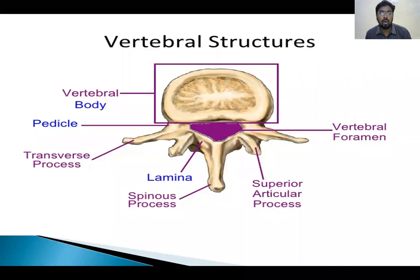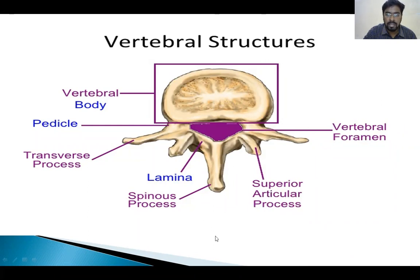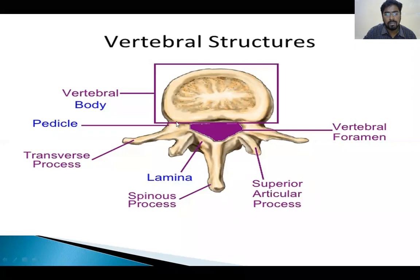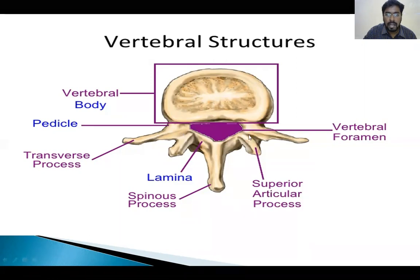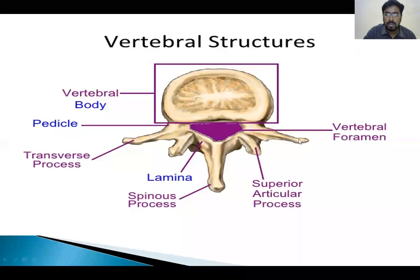Coming to the structures of a normal vertebra — we are seeing this vertebra from the superior view. This is the anterior part and this is the posterior part. The anterior part we call the vertebral body. The posterior structures are also called the neural arch. We see a pair of pedicles coming from the posterior aspect of the vertebral body. They continue as laminae. At the junction of the pedicle and lamina, we call it the pars interarticularis. There are seven processes in the posterior arch: two transverse processes, one spinous process, and four articular processes.